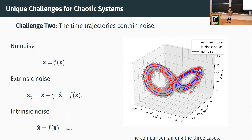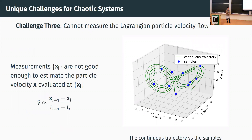The third challenge is sampling. In real-world situations, a measurement machine samples the dynamics, and we probably don't know the underlying dynamics. So we might not be sampling fast enough because we have no notion of what 'fast enough' means. For example, we sample the blue points but the underlying dynamics is the green trajectory. Since we're not sampling fast enough, the velocity approximated by standard divided differences won't be accurate enough to match the Lagrangian velocity. That's another difficulty when the data quality is insufficient to estimate the Lagrangian velocity.